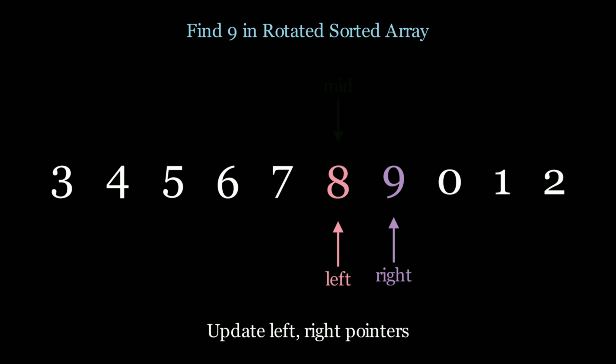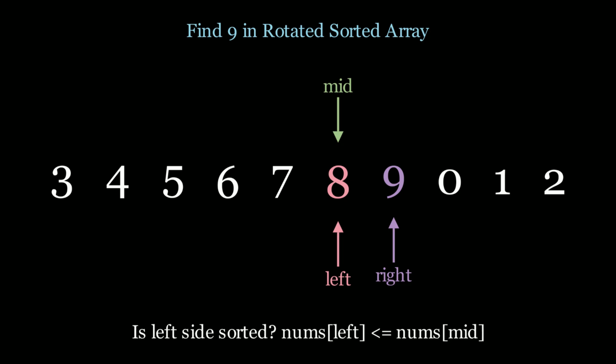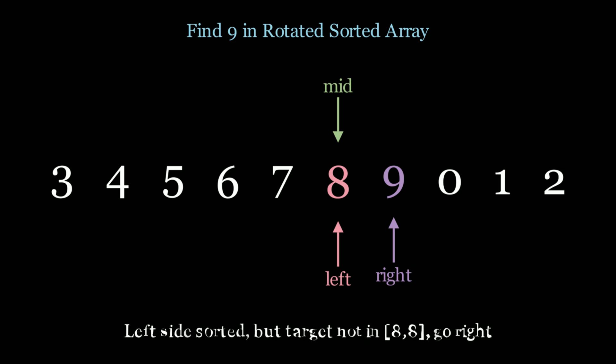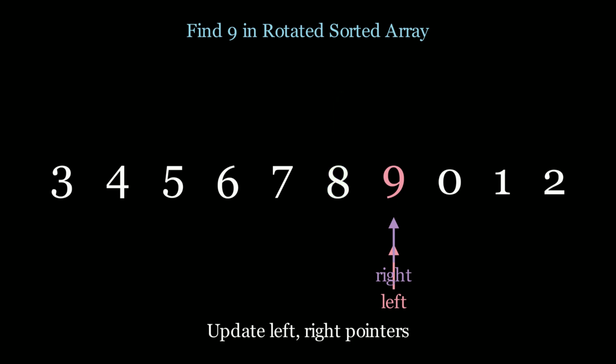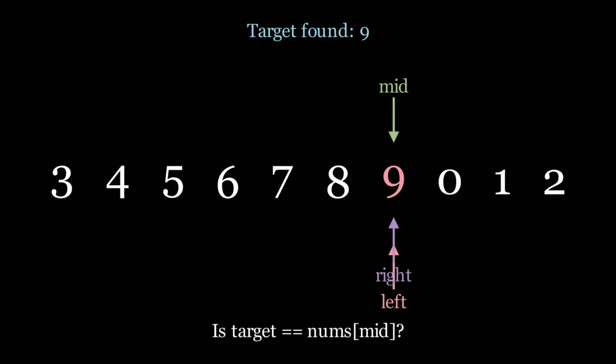We recalculate mid — in this case mid points to 8. Is 9 equal to 8? No. Is the left side sorted? Left is equal to mid, so yes, technically it's sorted — it's just one number. But our target is 9, which is not in the range of 8 to 8. So our only chance is to explore the right side. We calculate mid and find our target equals 9 — we found it. This runs in log n time. Now what if we were searching for 10? We would end up at the same position but notice that 10 is not in the array. Eventually left would be greater than right, we'd stop the iteration and return negative 1.